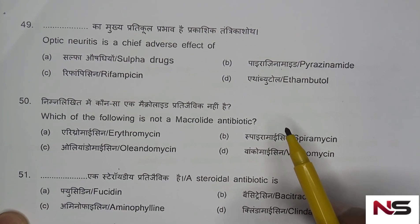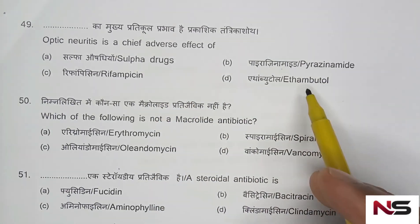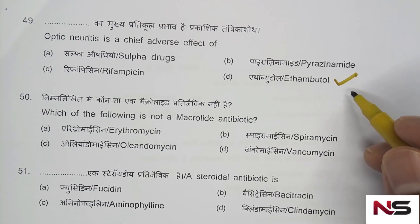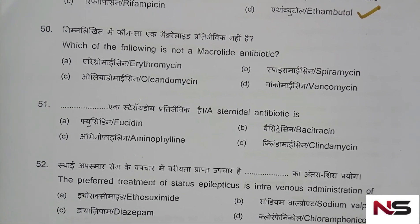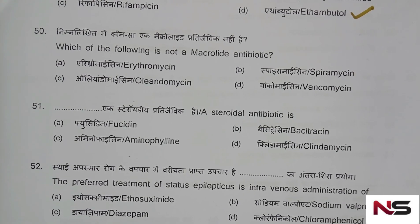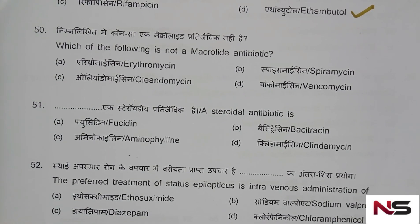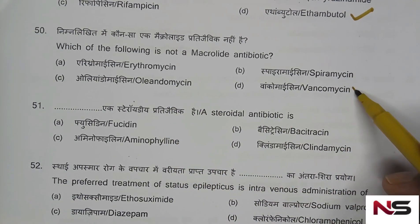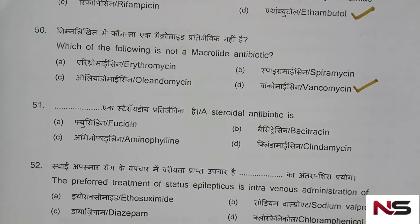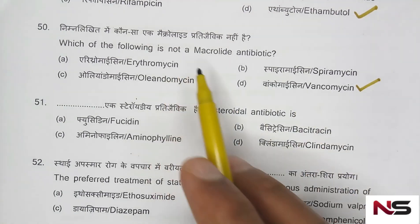Question 49: Optic neuritis is a chief adverse effect of which anti-TB drug? Options are: sulfa drugs, rifampicin, pyrazinamide, ethambutol. The correct answer is option D — ethambutol. Question 50: Which of the following is not a macrolide antibiotic? Options are: erythromycin, spiramycin, oleandomycin, vancomycin. The correct answer is vancomycin — it is a glycopeptide antibiotic, not a macrolide.